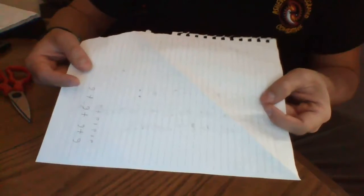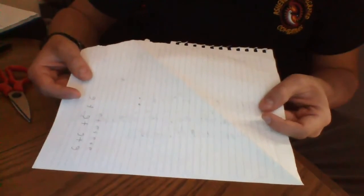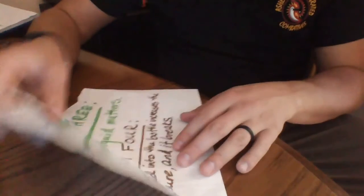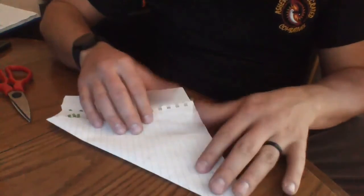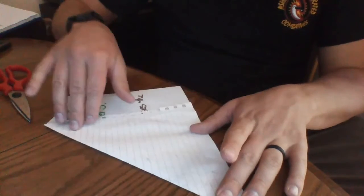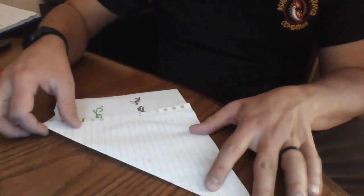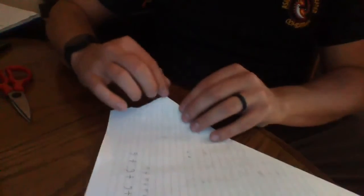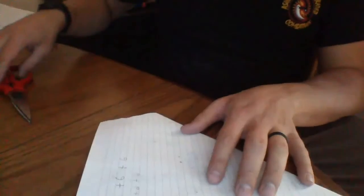So I don't have any origami paper unfortunately, it's all at my desk at school. So we're just gonna take a piece of notebook paper and turn it into a piece of origami paper. All you gotta do for that is just take a scrap piece of paper, fold it end-to-end, make this nice right triangle, then flip it over and cut down one of these lines to make a nice square.